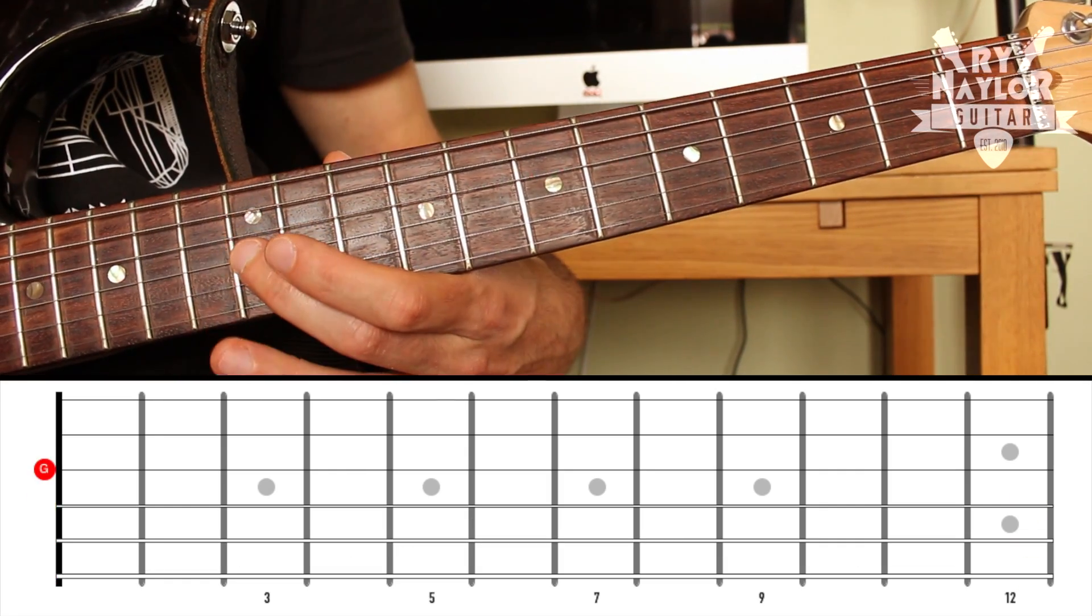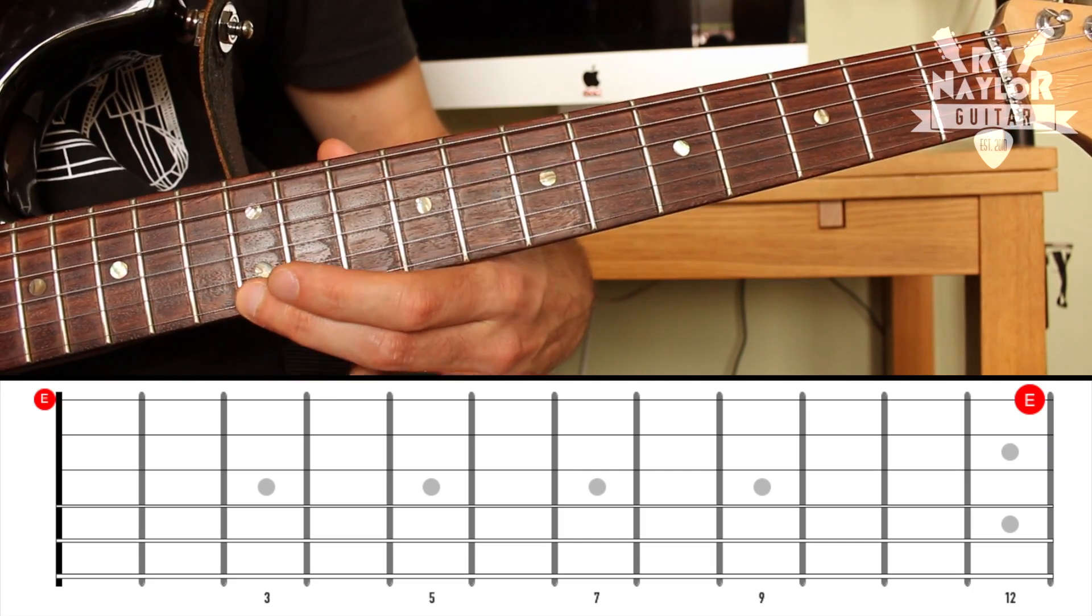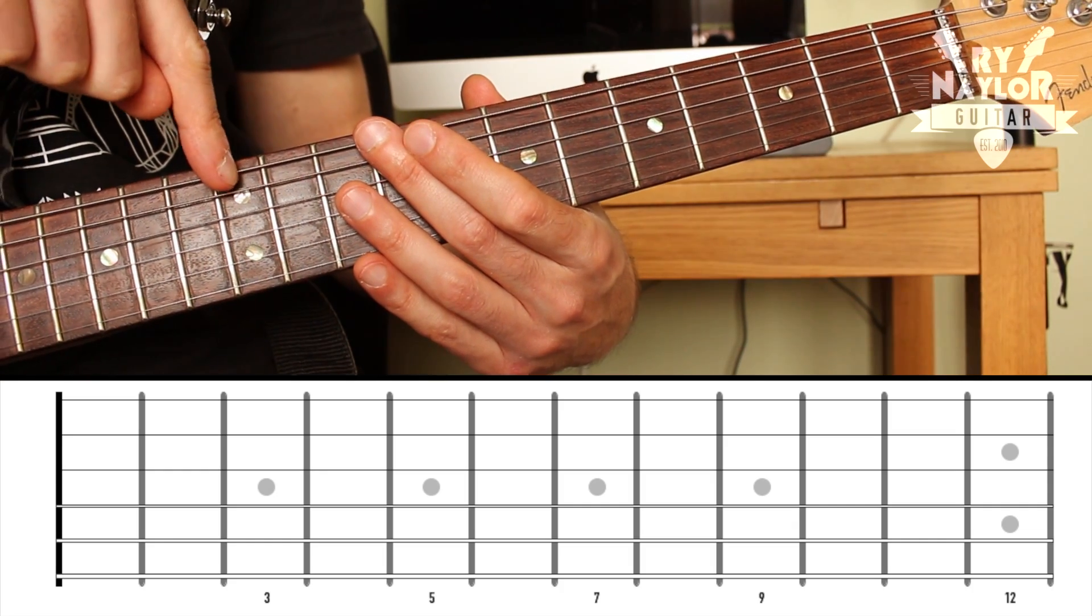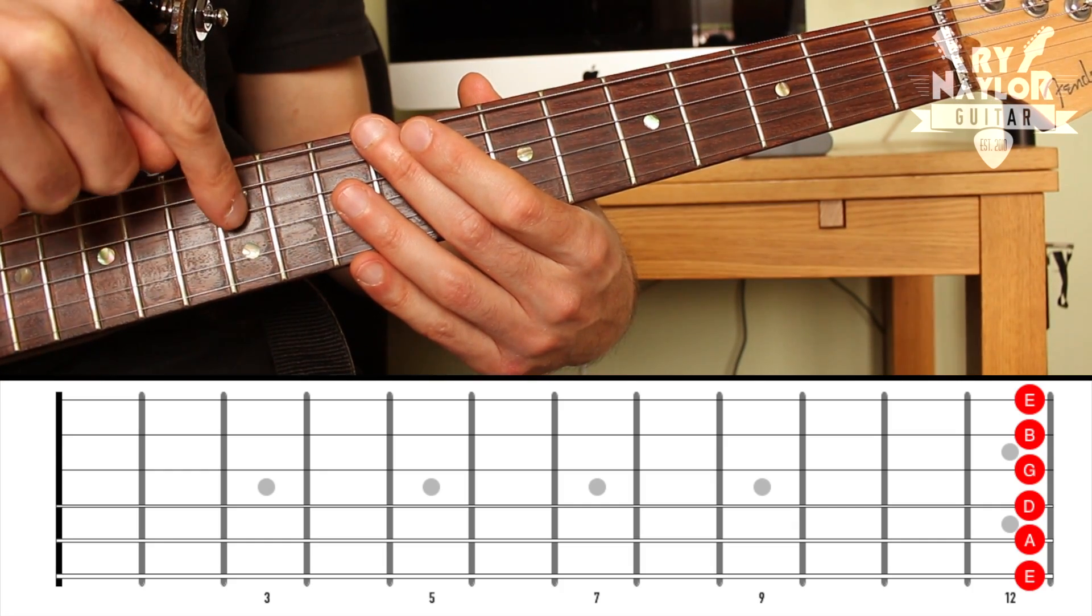So straight away, you will now be able to name all of the notes in the 12th fret. E, A, D, G, B, E.